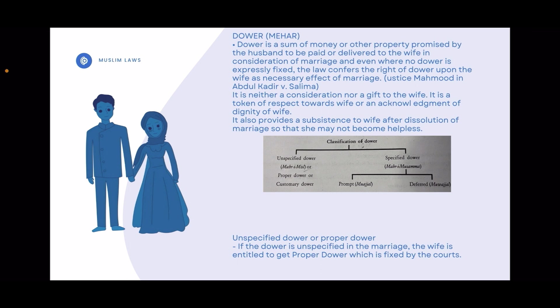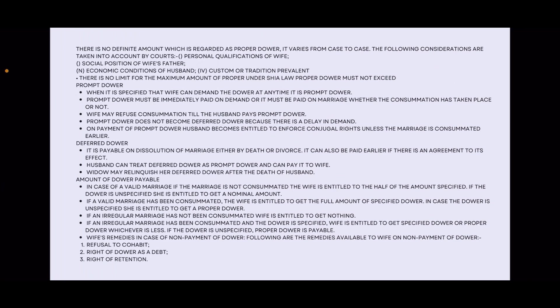The first classification is Unspecified Dahr or Proper Dahr. If the Dahr is unspecified — meaning the amount of Dahr was not stated in the marriage — the wife is entitled to get Proper Dahr, which is fixed by the court. Proper Dahr is not a definite amount; it varies from case to case.